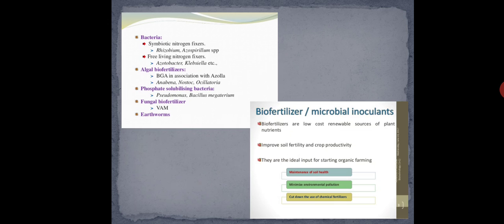Next are algal biofertilizers — fertilizers made up of algae. An example is BGA, which stands for Blue-Green Algae. Next is Nostoc and Oscillatoria — these are all examples of nitrogen-fixing organisms made from algae. Oscillatoria is a filamentous cyanobacteria named for its oscillating pendulum-like movement.